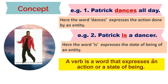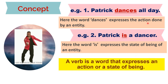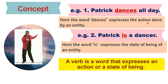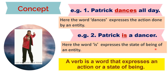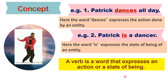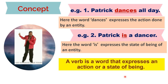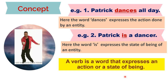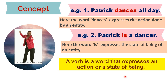So what is a verb therefore? A verb is a word that expresses not just the action, but it could also express the state of being of an entity. This is the complete definition of a verb. It is not just an action word; it is also a word that reflects the state of being of an individual, a thing, or an entity.